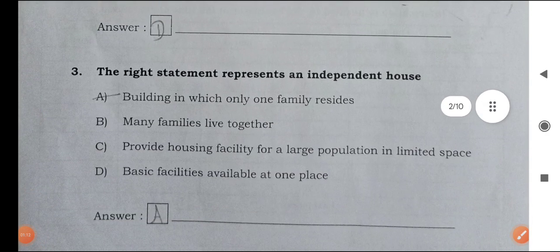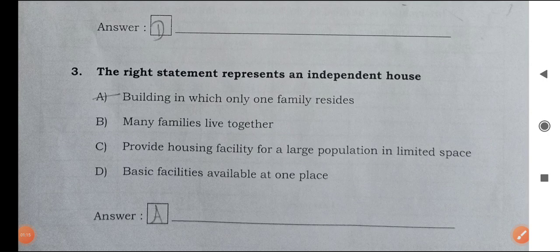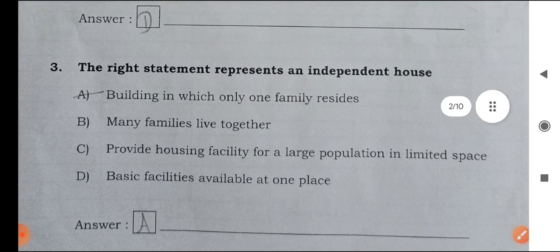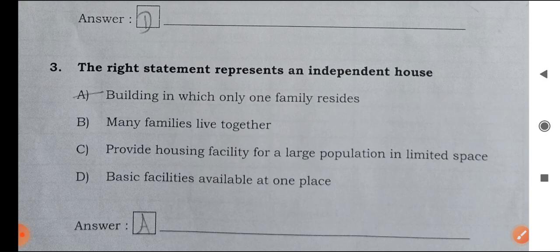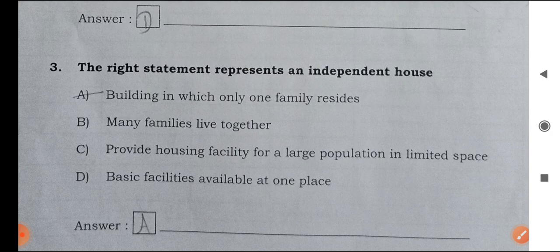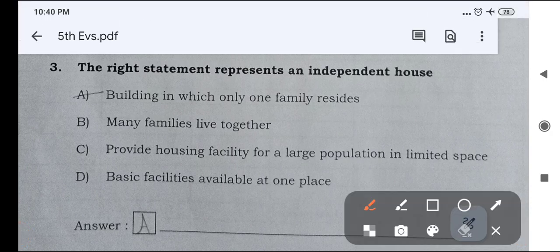Next one, the right statement represents an independent house. Options are building in which only one family reside, many families live together, provide housing facility for a large population in limited space, basic facilities available at one place. Right answer is option A, building in which only one family resides.